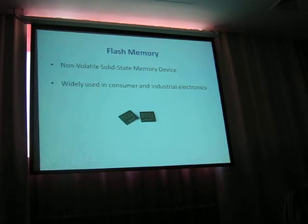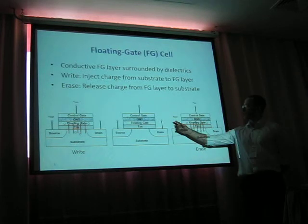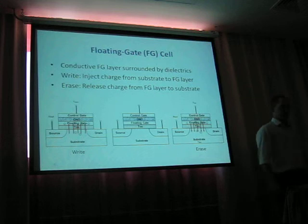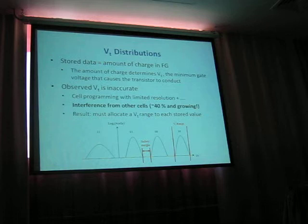Flash memory is widely used as an entire solid-state memory device. The concept consists of storing charge in a floating gate layer surrounded by dielectrics. The stored data is the amount of charge in floating gates. The amount of charge determines the voltage threshold of the cell, the Vt, the minimum gate voltage that causes the transistor to conduct.